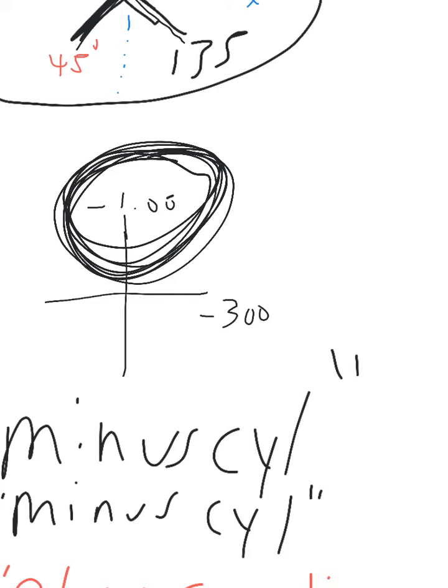So you start with minus 1. Then the middle number, the cyl number, is the difference between minus 1 and minus 3. When you go from minus 1 to minus 3, you subtract minus 2. That's the middle number.